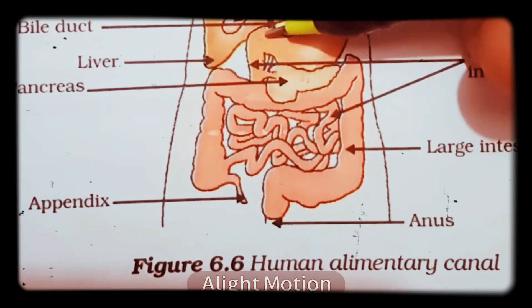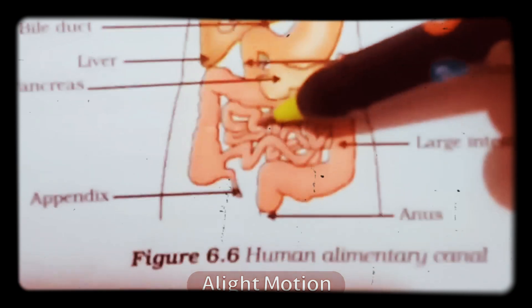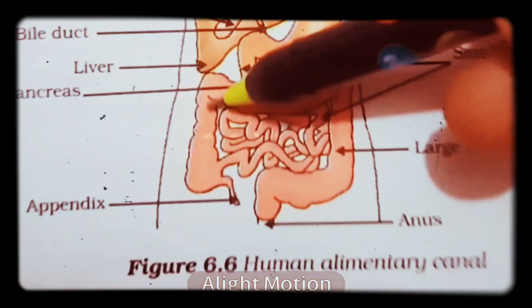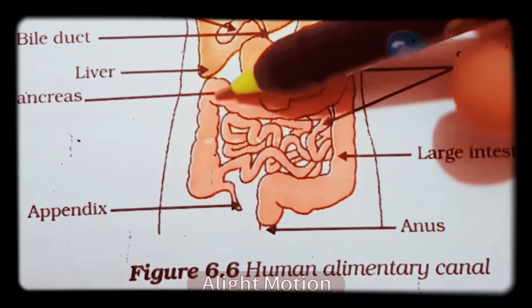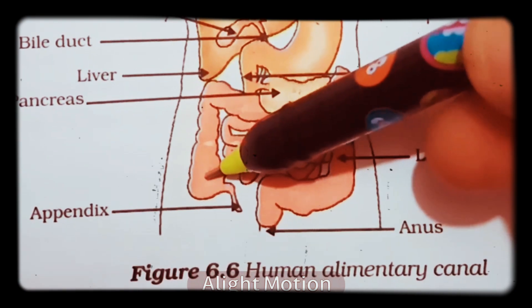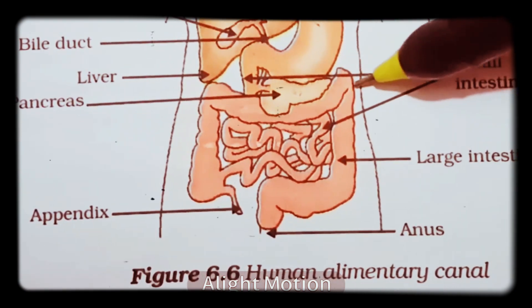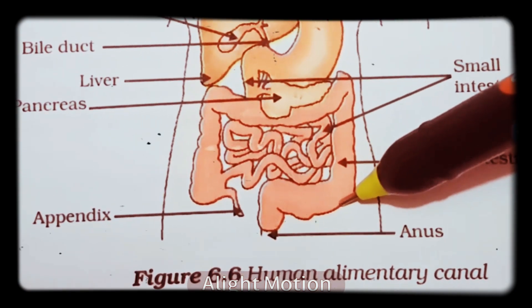Next, the duodenum is connected with the small intestine, and the small intestine connects to the large intestine. The large intestine is made up of three portions called the ascending colon, transverse colon, and descending colon. Colon means intestine.